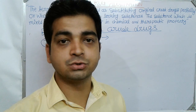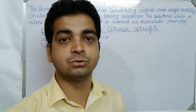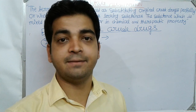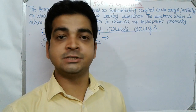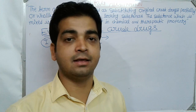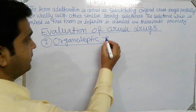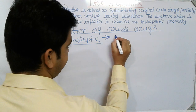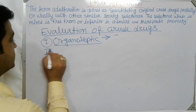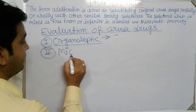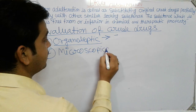Whenever we are evaluating these parameters and they cross the acceptable range, sometimes organoleptic evaluation will not be sufficient. So in that case we go for microscopical evaluation. In microscopical evaluation, we study the histological characters of the crude drug — for example, if it is a leaf, it will have upper epidermis, lower epidermis, trichomes, vascular bundles, xylem, and phloem.